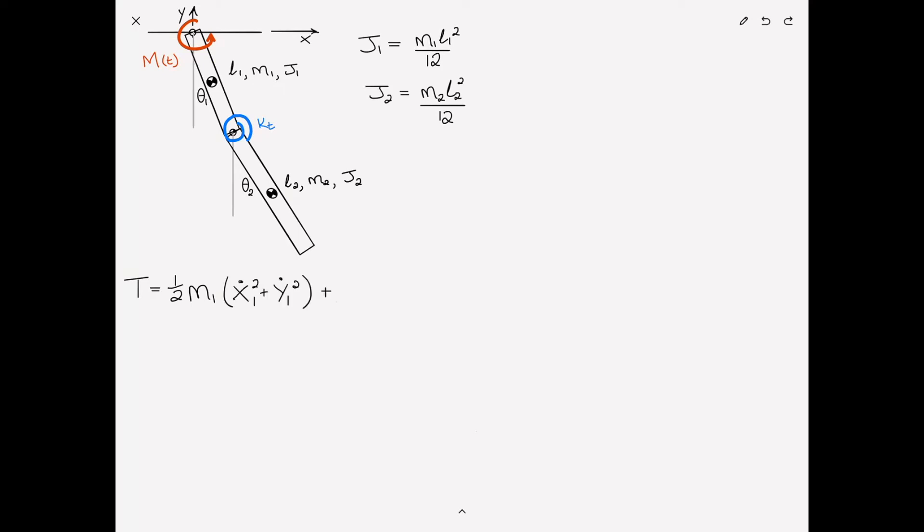From mass number two, one half m2 times x2 dot squared plus y2 dot squared. Then we've got to include the rotatory kinetic energy of each of the masses: one half j1 theta 1 dot squared plus one half j2 theta 2 dot squared. That's as easy as can be. The only difference here is we're including the rotatory kinetic energy.